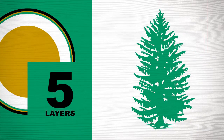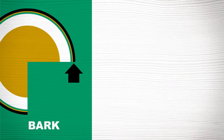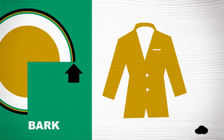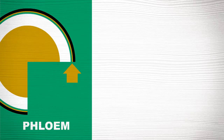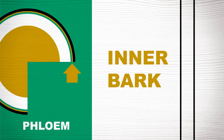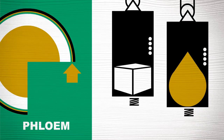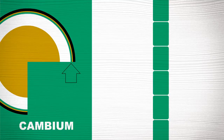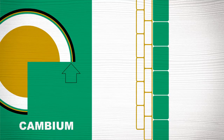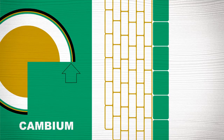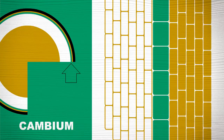A typical tree has five layers in its trunk. First, the bark — the bark is like a protective jacket for the tree. Under the bark is the phloem, also known as the inner bark. It transports sap and sugars from the needles and leaves to nourish the rest of the tree. Next comes the cambium, the growing part of the trunk. On one side it creates new wood cells, and on the other, it creates new bark.